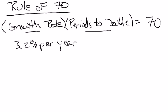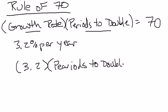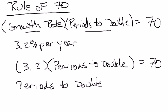Well, the rule of 70 is just one equation with two unknowns. If you know any one of the unknowns, you should be able to figure out the second unknown. So in this case, if the growth rate is 3.2%, then I can just go ahead and plug that in for the growth rate. Periods to double, which in this case will be years since it's 3.2% per year, periods to double equals 70. And now it's just a simple high school algebra problem.